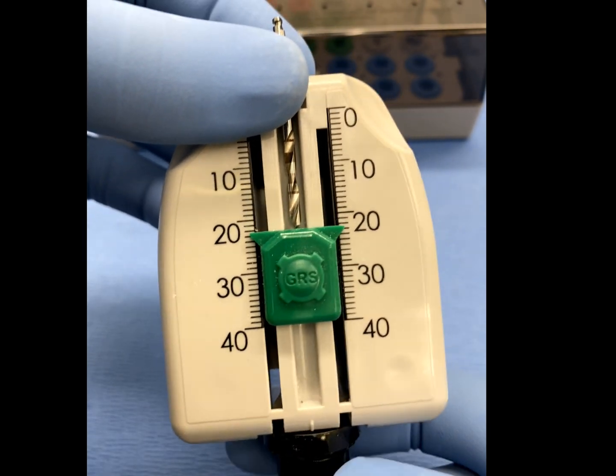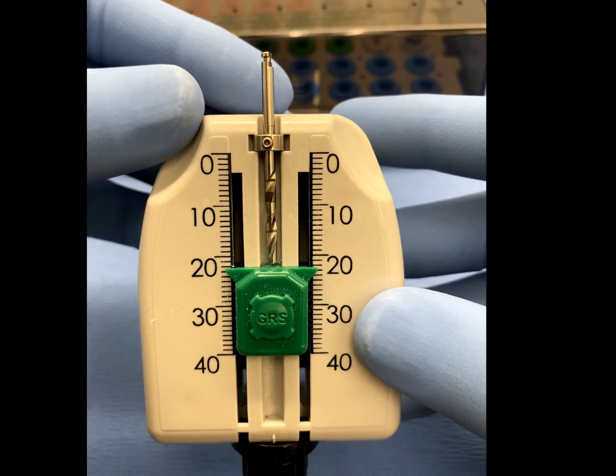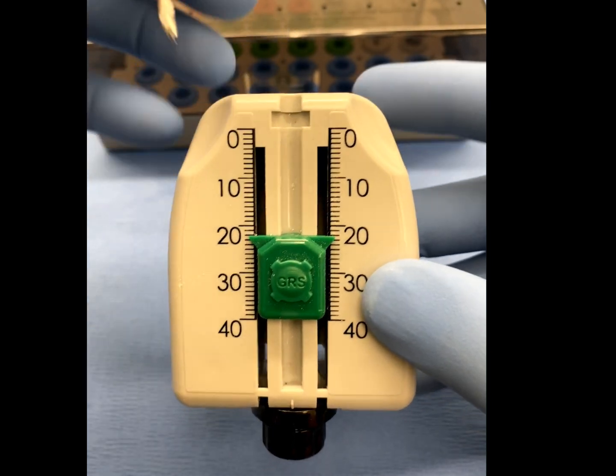Then rotate the knob located on the GRS depth gauge. The adjustable slider will then travel to lightly engage the tip of the drill.